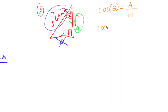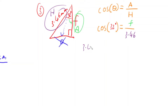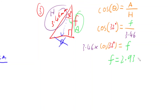The trig ratio that has adjacent and hypotenuse is the cosine ratio: cosine of the angle equals the adjacent divided by the hypotenuse. So cos of 32 degrees equals F divided by 3.46. I multiply both sides by 3.46 to isolate F, giving 3.46 times cos of 32 degrees. Plugging into the calculator, F is approximately 2.93 millimetres.